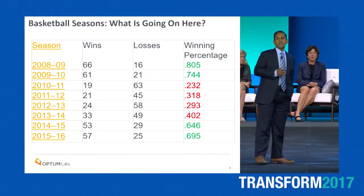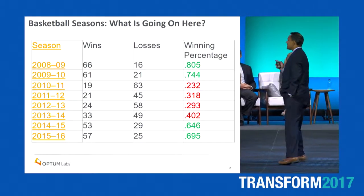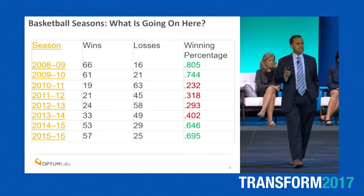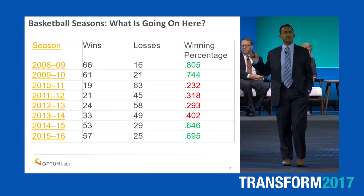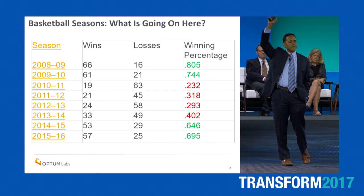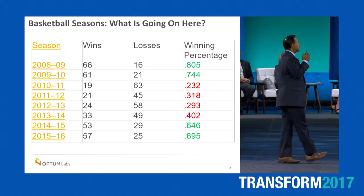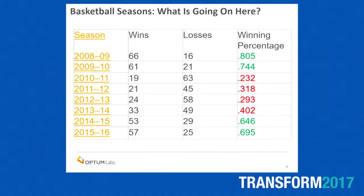I'm going to start with an analogy. This right here is the NBA record of a particular team starting in 2008 up until 2016. You can see the number of wins and losses and the winning percentage. Something happened to this NBA team in those intervening years. This is what happened to the Cleveland Cavaliers when LeBron James left in 2010, and then what happened when he came back to the city in 2014.